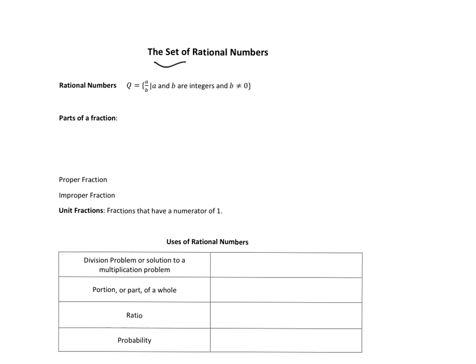We're going to talk about the set of rational numbers. This builds on the integers we've been learning about, writing them as a ratio or fraction — the form a over b. The actual definition is that both a and b are integers.